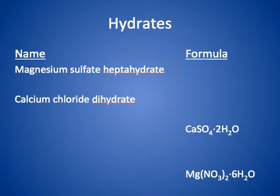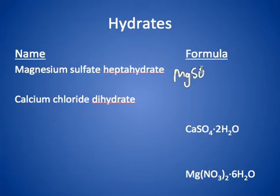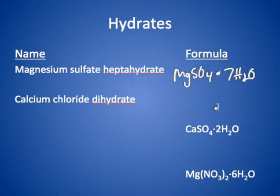Let's do some practice naming. You can stop and try these yourself. Magnesium is +2, sulfate is -2, so the formula is MgSO4. A dot is shown between the ionic substance and the water — HEPTA meaning seven — and that's H2O. So MgSO4·7H2O is Epsom salt. It's actually printed right on the outside of the box of Epsom salt with that exact formula.